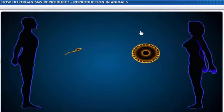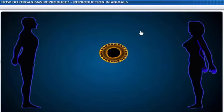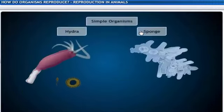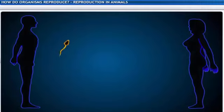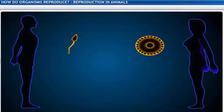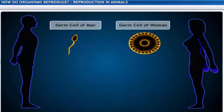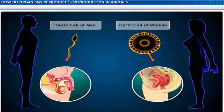When germ cells from two individuals combine during sexual reproduction, a new individual is formed. In simple organisms, two germ cells may be quite similar to one another. In complex organisms, the germ cells are more specialized — one germ cell is large and stores food, while the other is smaller and motile. This motile germ cell is the male gamete, and the larger germ cell is the female gamete. This differentiation in germ cells means the female and male reproductive organs are different, leading to dissimilarities in the bodies of male and female animals.